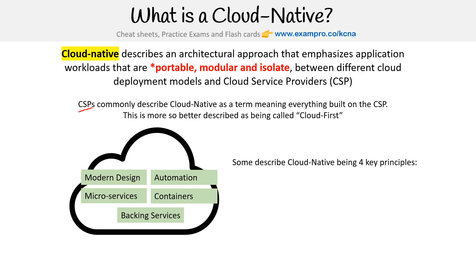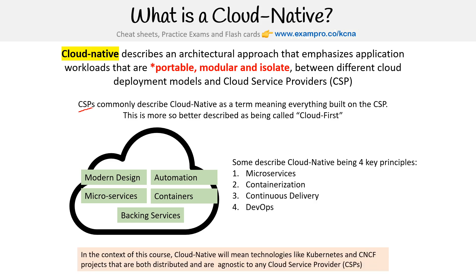Some describe cloud native as having four key principles — you can see there are variations on this: microservices, containerization, continuous delivery, and DevOps. So it really depends on the context. In the context of this course, cloud native will mean technologies like Kubernetes and the CNCF projects, which we'll talk about, that are both distributed and agnostic to any cloud service provider.